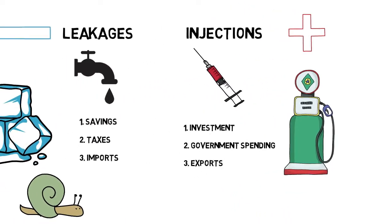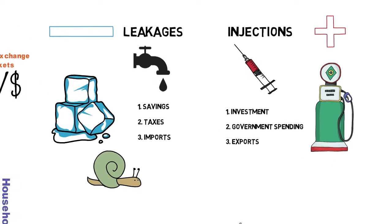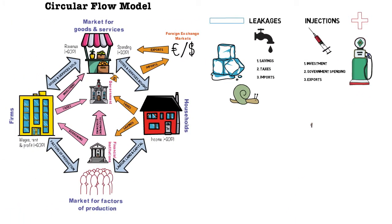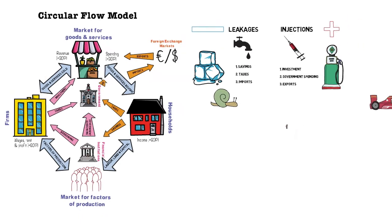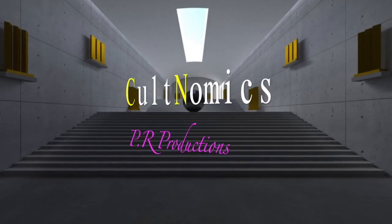Injections pump extra fuel into the economy to kick-start it, and they speed up the economy by putting more revenue into circulation. Overall, it is a balance of these leakages and injections that causes an economy to increase or decrease its economic activity. I hope you come back to Cultnomics soon — bye for now.